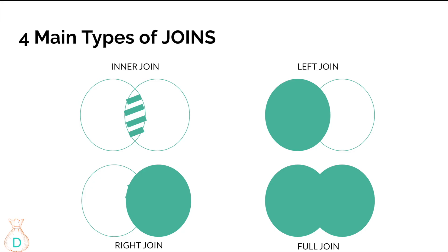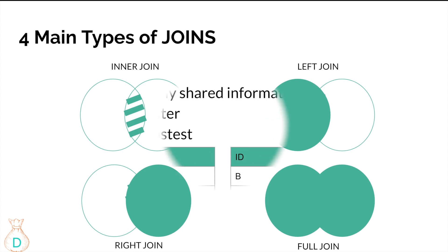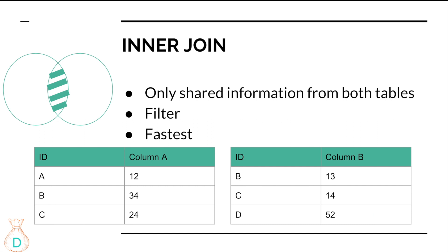Here are the four main types of joins. I'm helping you visualize them like a Venn diagram. An inner join means you have two different tables and you're only taking the common section in the middle. A left join keeps everything from the first table and tries to find matching information from the right table. A right join is the reverse — you keep everything from the second table. A full join gets all values from both tables.